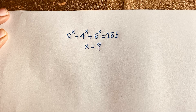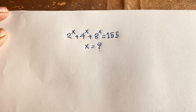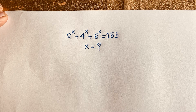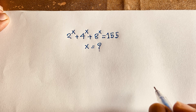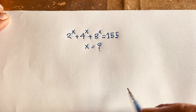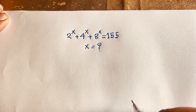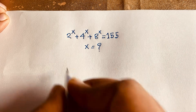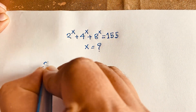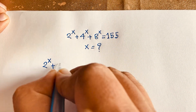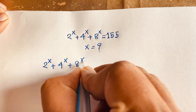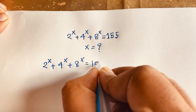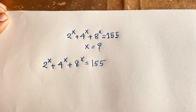Hello everyone. In this video we have solved this interesting Math Olympia question. The question is: 2 to the power x plus 4 to the power x plus 8 to the power x is equal to 155. What is x? Let me solve this question step by step.